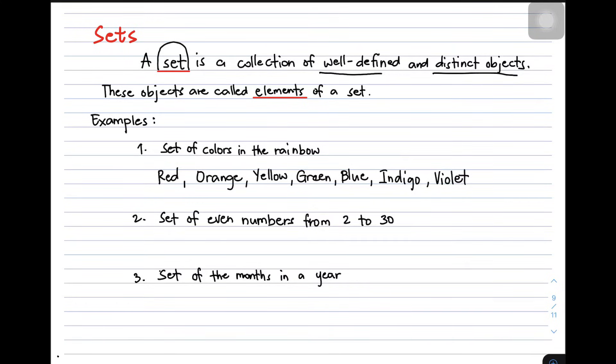Those are the two characteristics we need to see for us to say that those things are examples of a set. And the objects in the sets are called the elements. Okay? So for you to have a deeper understanding about sets.